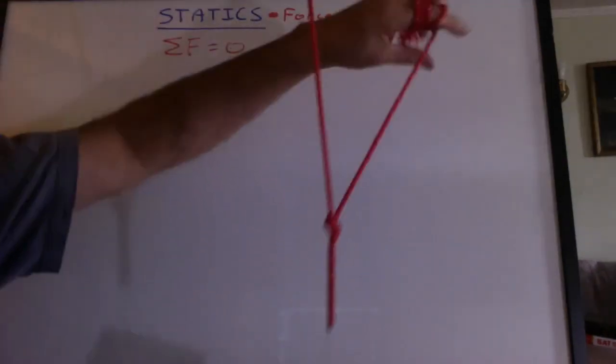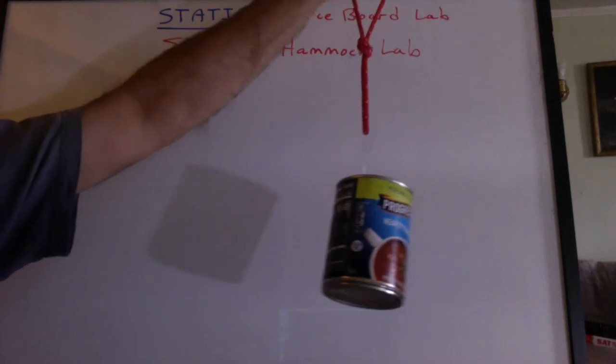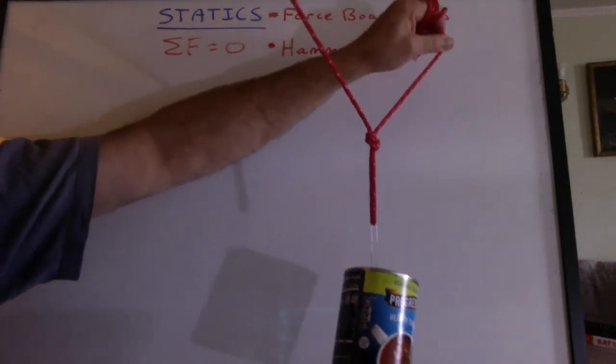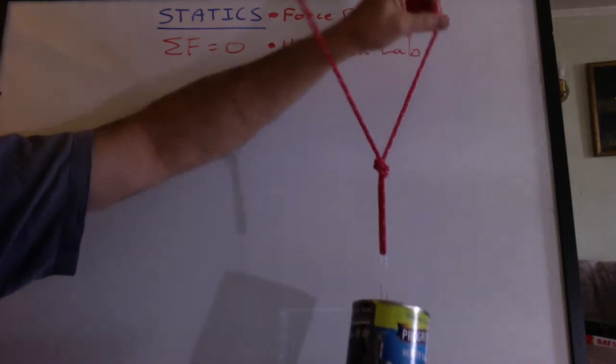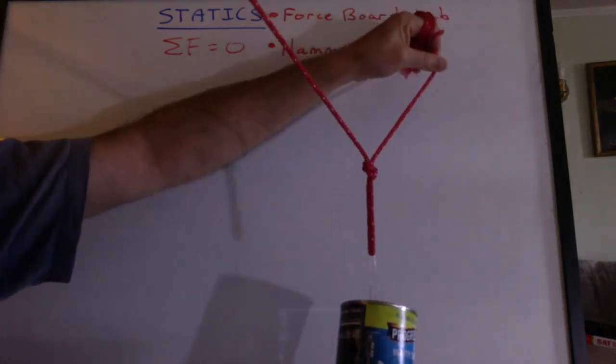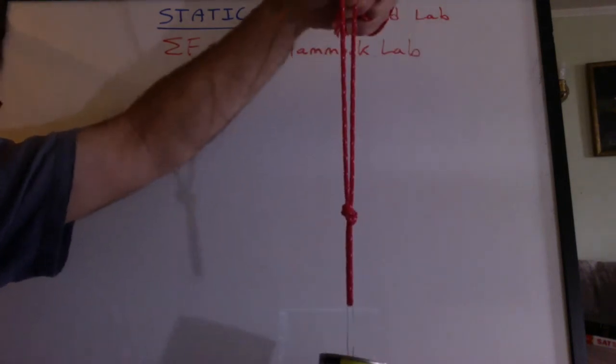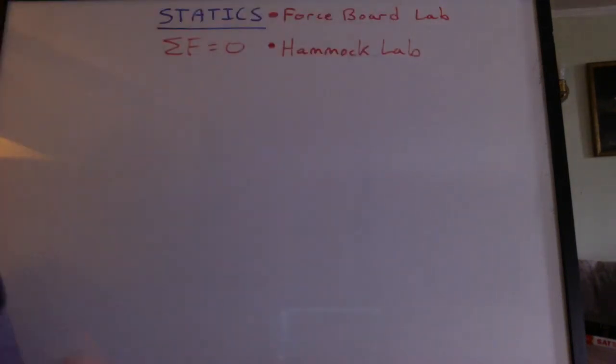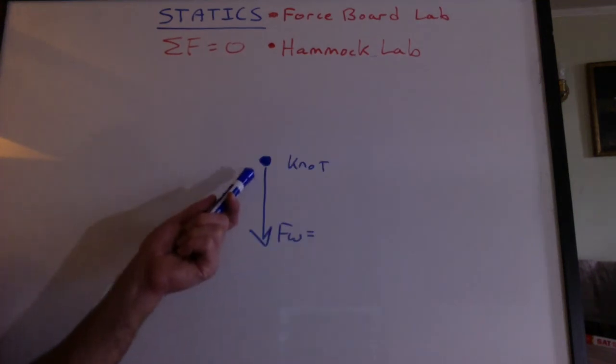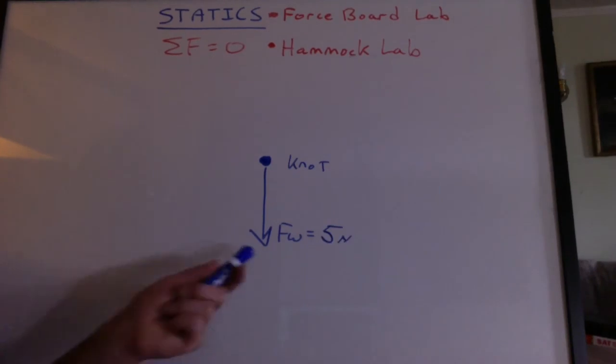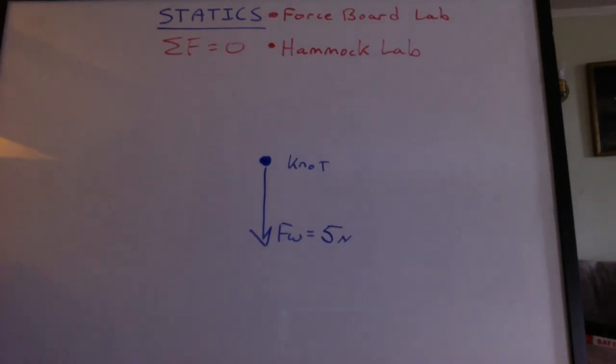Here's a fun little demo to do. We've got a can of soup hanging from this knot, and I've got the two strings pulling on the knot. Let's explore what happens as I change the angle.